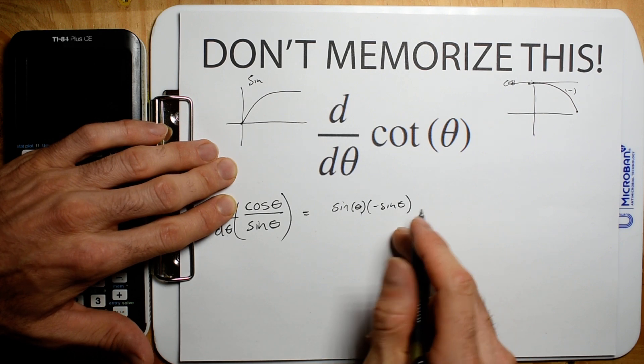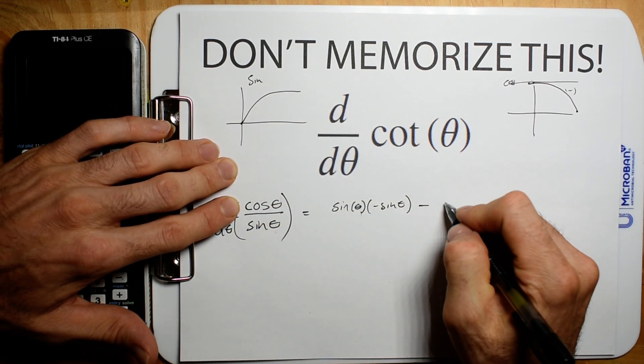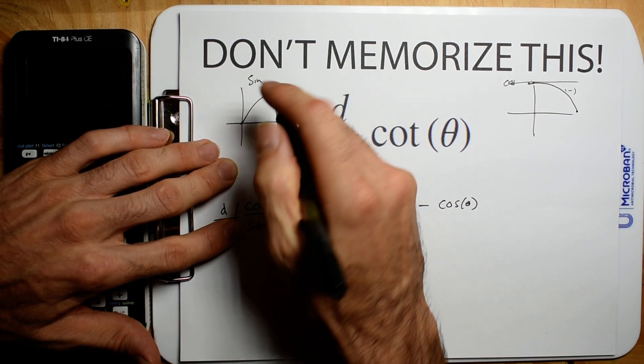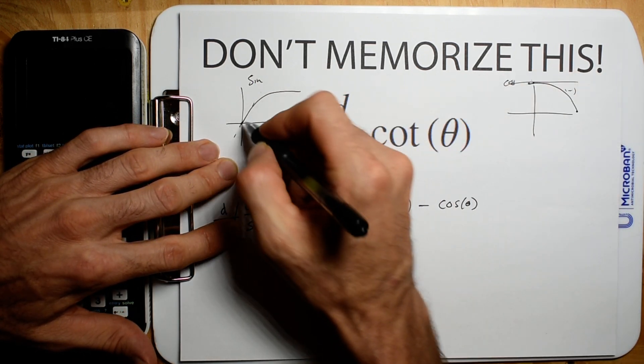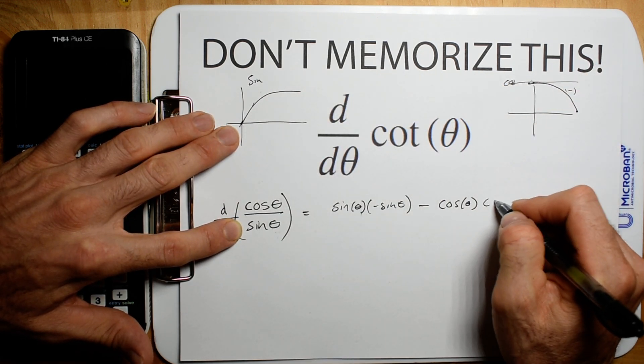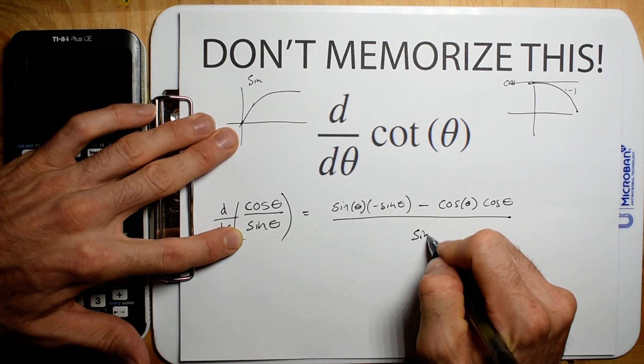And then, so we have bottom d top minus top d bottom. Derivative of sine. We have a slope of 1 at 0. So what, when you throw in 0, gives you 1? Cosine. So we're going to have cosine theta. All divided by the bottom squared.